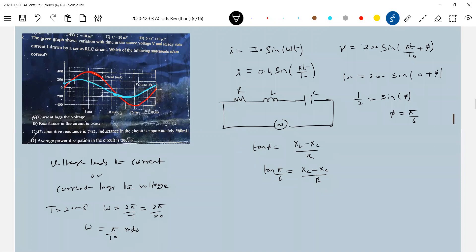Now, do we know the impedance of circuit? We know VRMS, IRMS. So what is the impedance equal to? Applied voltage VRMS by IRMS. So what is the VRMS? 200 by root 2. What about IRMS? 0.4 by root 2.